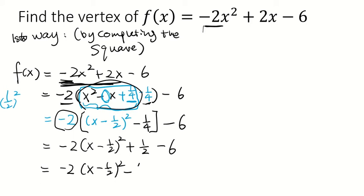We have negative 2 x minus 1 half squared. Minus, I think it's 1 half plus 10, no, 12 over 2, which is 11 over 2. So with this, we know the vertex is, from this vertex form, 1 half negative 11 over 2.